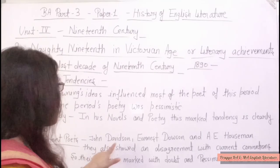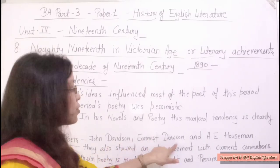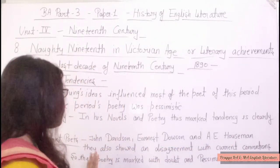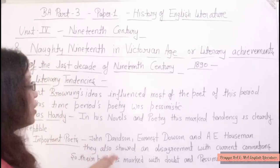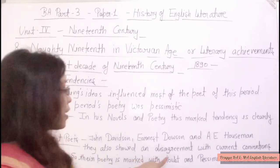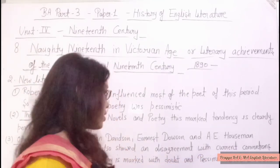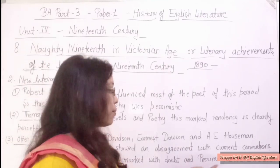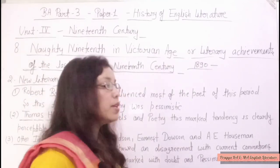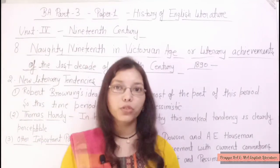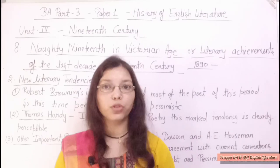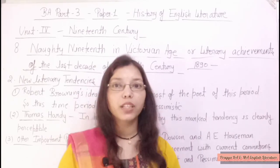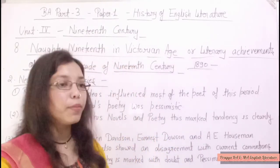Three poets of this period — John Davidson, Ernest Dawson, and A.E. Housman — also showed disagreement with current conventions. Their poetry is marked with doubt and pessimism. This time period's poetry was pessimistic, what in Hindi we call 'nirash-vadi'.